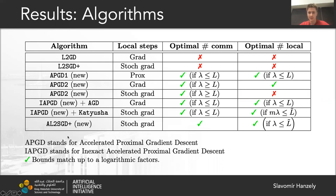We present an accelerated L2SGD+ algorithm, which is an accelerated version of the standard L2SGD+ algorithm. As part of that, we present two versions of accelerated proximal gradient descent, including an inexact version where, instead of computing the exact proximal step, we approximate it using any solver. We opt for accelerated gradient descent and Katyusha to obtain the optimal rates.